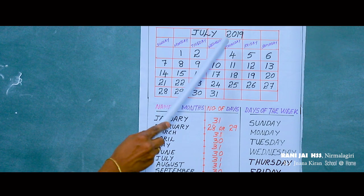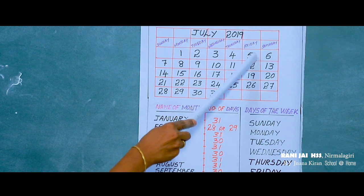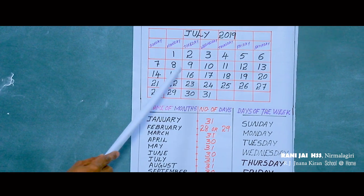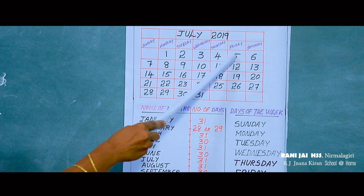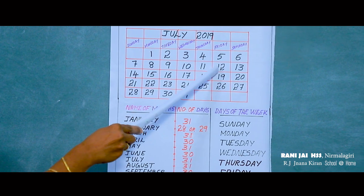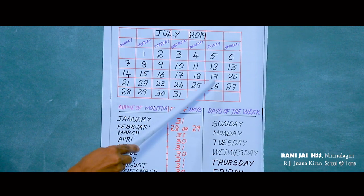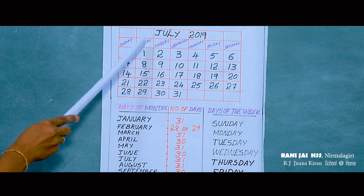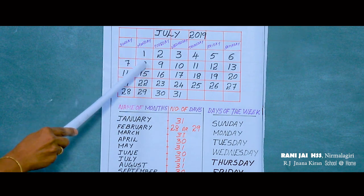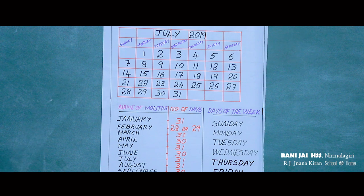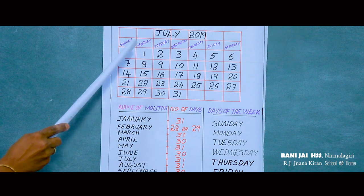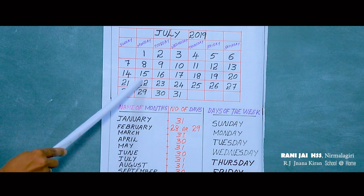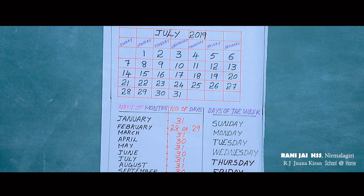Children, which days are Fridays? Which days are Fridays? 5, then 12, 19, 26. Then look — which days are Mondays? Which days are Mondays? Yes — 1, 8, 15, 22, and 29.